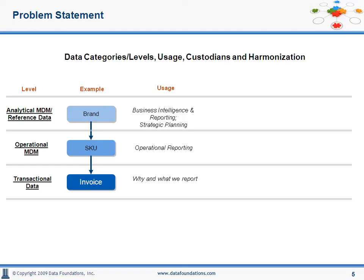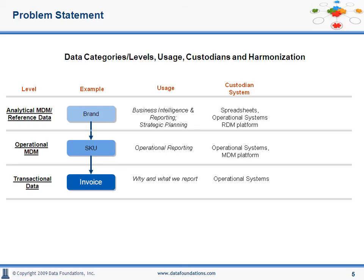Master data is more for operational reporting. Transactional data is, obviously, what we're reporting on. Looking at the typical custodian systems or source of creation for each level: reference data is generally stored in enterprise applications or in spreadsheets, or, more recently, in dedicated reference data management systems — which is the right way to do it. Master data typically is in transactional systems or a dedicated MDM solution. So, why harmonize? The need to report across multiple systems or any kind of data integration is almost always a start point for harmonization.